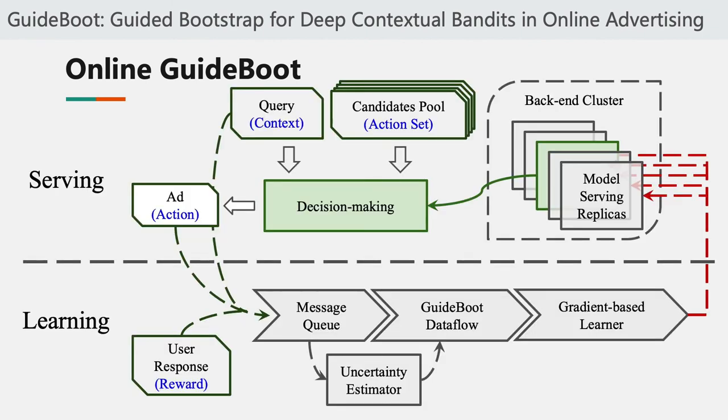This figure shows the workflow of online GuideBoost, which has two parts. In the learning part, we receive feedback from users and send it to a message queue. We use an uncertainty estimator to provide the uncertainty, then send the data to the GuideBoost dataflow to generate fake samples, and finally these samples are sent to the gradient-based learner to train the models. In the serving part, we randomly select one model from the backend cluster to make the decision.